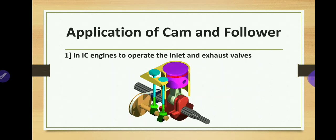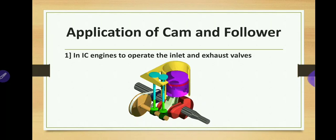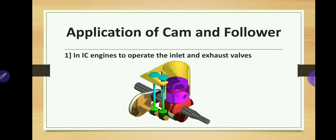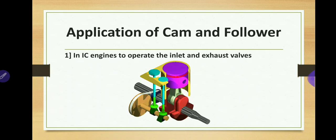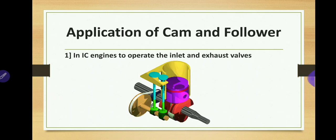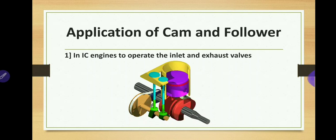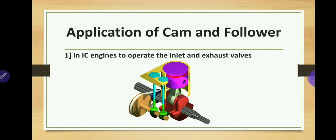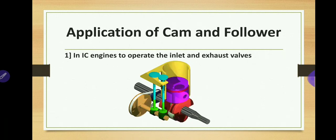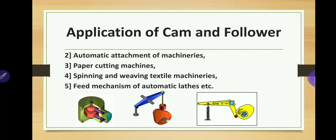This motion can be used in various applications. The first example is an IC engine, where cam and follower is used most commonly. In an IC engine, to operate the inlet and exhaust valves, we use cam and follower. In the IC engine chamber, you have to open and close the inlet valve at a particular time to allow in the gas or fuel mixture, and also open and close the exhaust valve to take out exhaust gases. The valve timing of inlet and outlet must be precise, and that is done with the help of cam and follower.